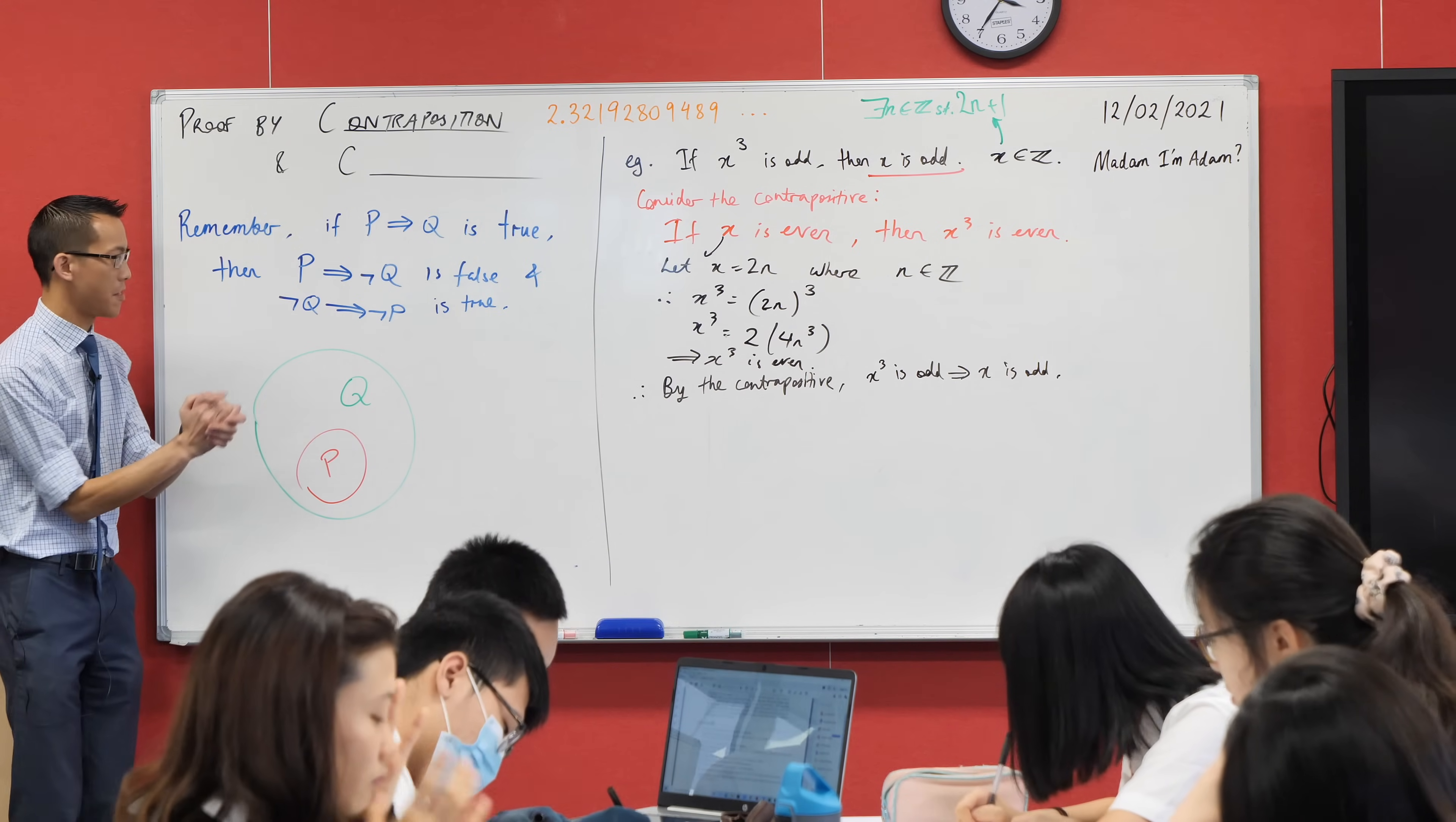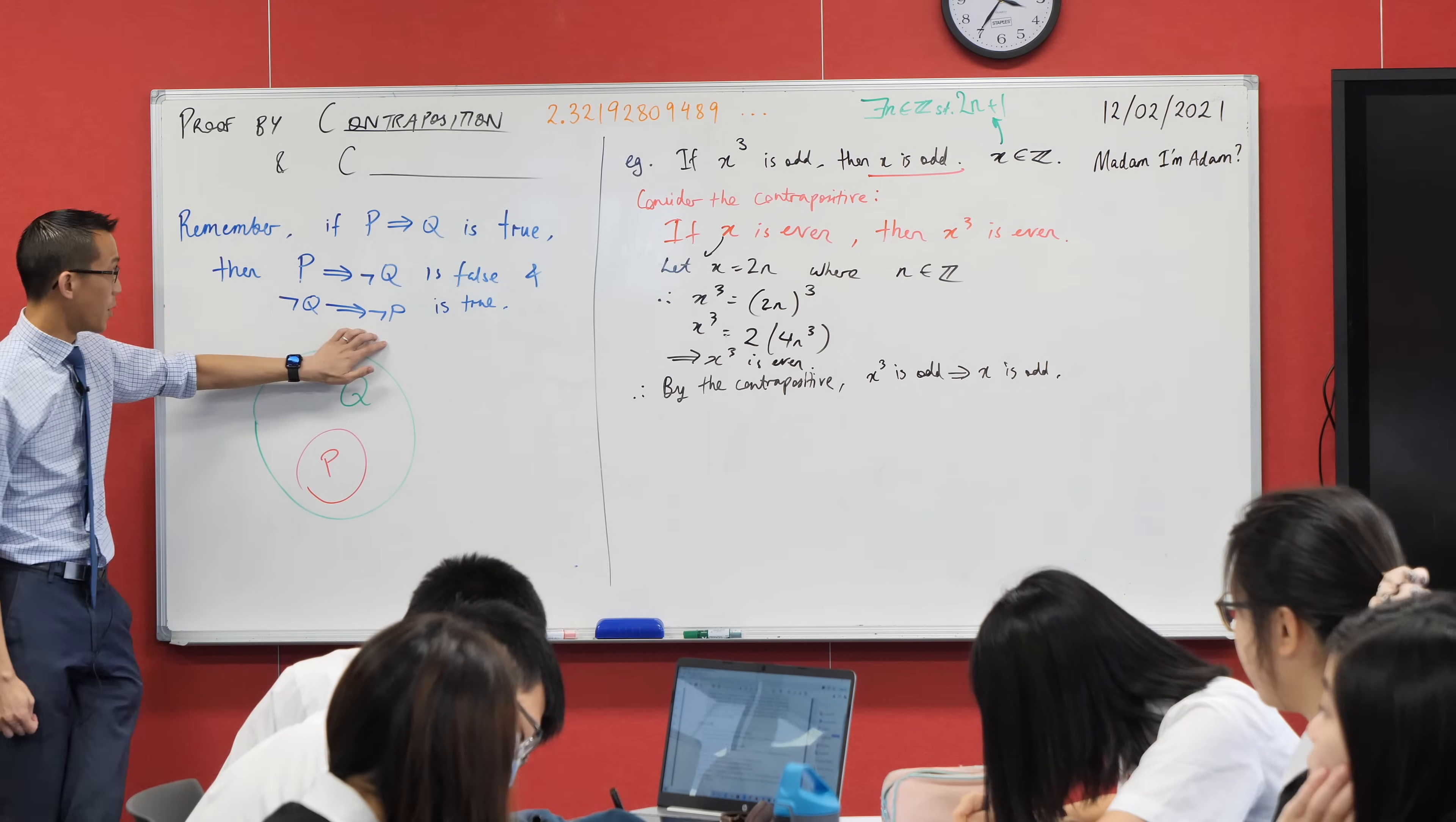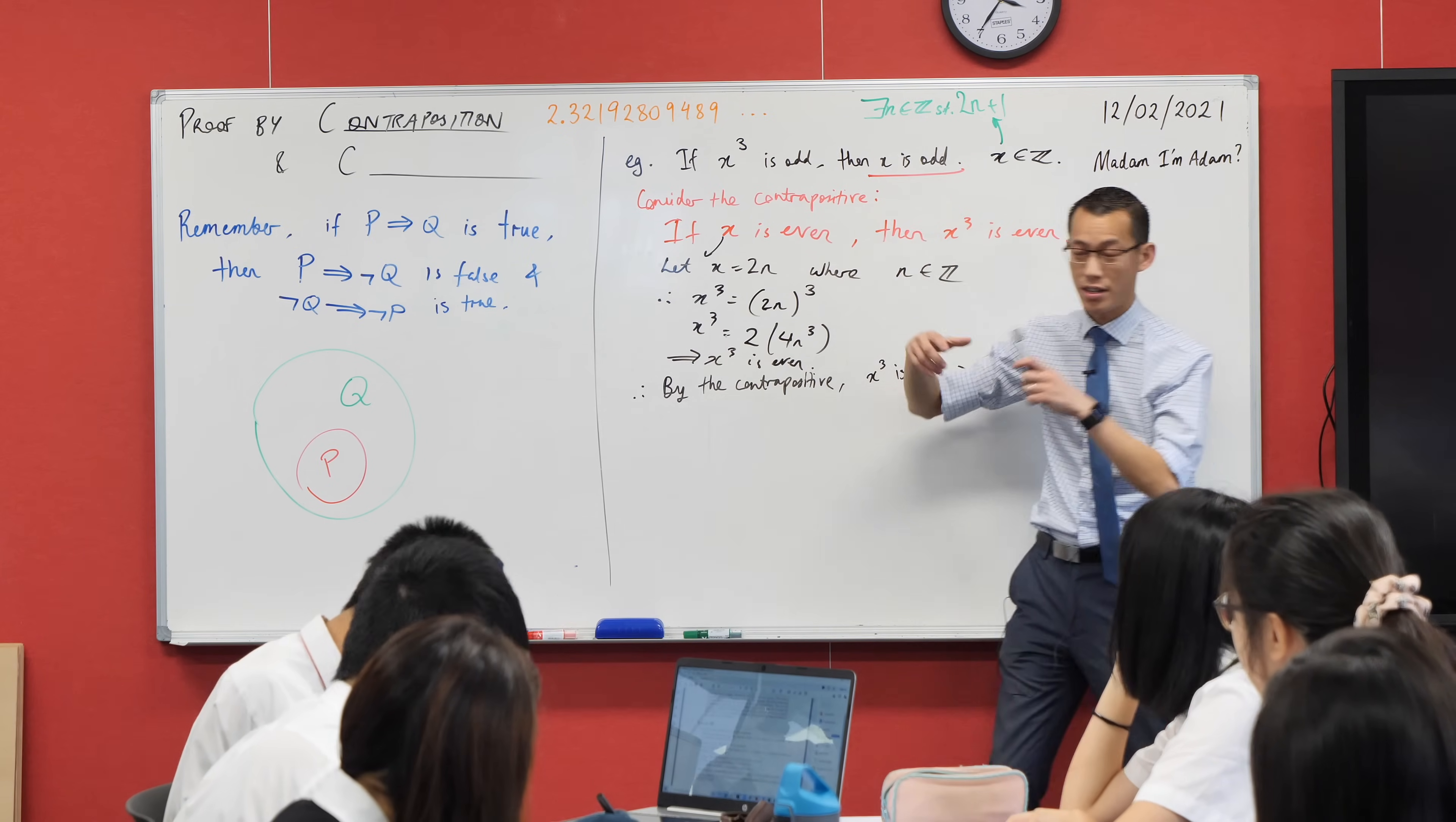Now, again, really quickly, thinking about how to use this other one to prove something is true. What do we call this? Does anyone know? We've actually talked about this briefly before. When you're using the negation, we call this proof by contradiction, very good.